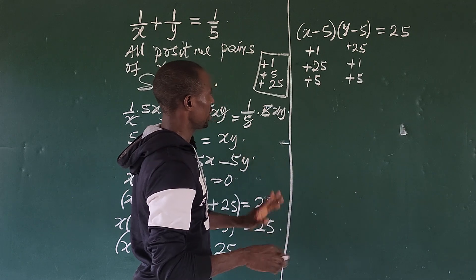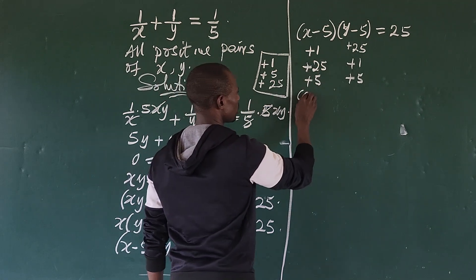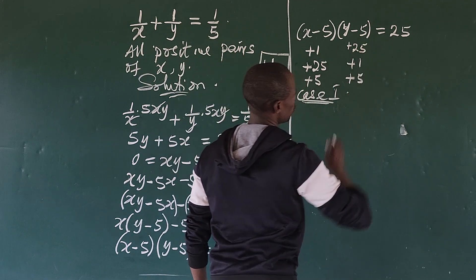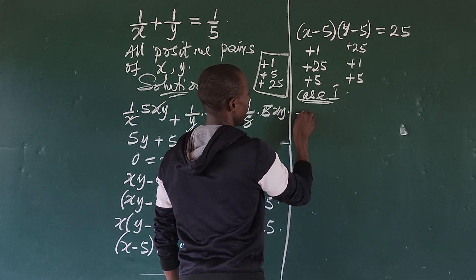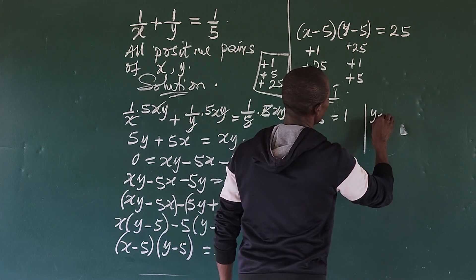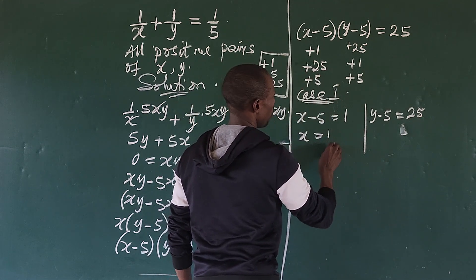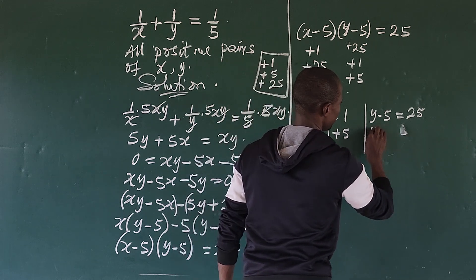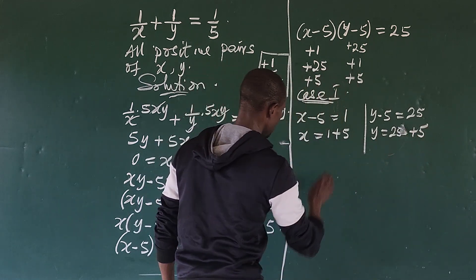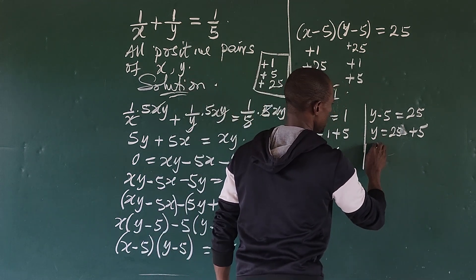Let's take Case 1: if (x minus 5) equals 1, then (y minus 5) equals 25. So x equals 1 plus 5, which gives x equals 6, and y equals 25 plus 5, which gives y equals 30.